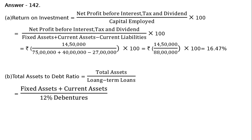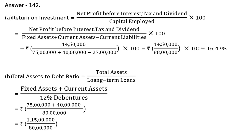B. Total Asset to Debt Ratio is equal to fixed assets plus current assets, whole divided by 12% debentures. That is equal to Rs. 75,00,000 plus Rs. 40,00,000 divided by Rs. 80,00,000, that is equal to 1,15,00,000 upon Rs. 80,00,000, which equals 1.44 to 1.